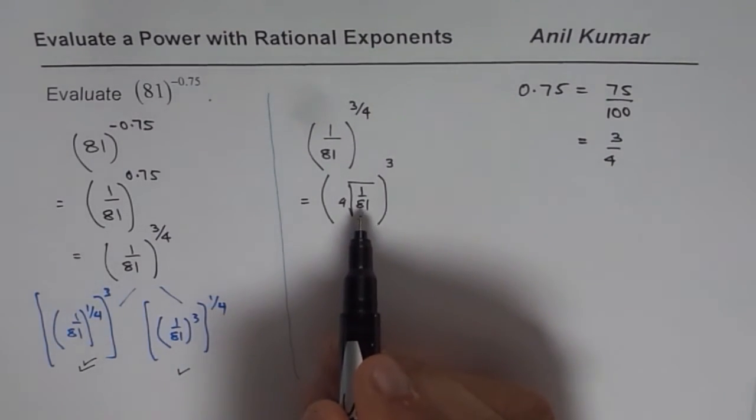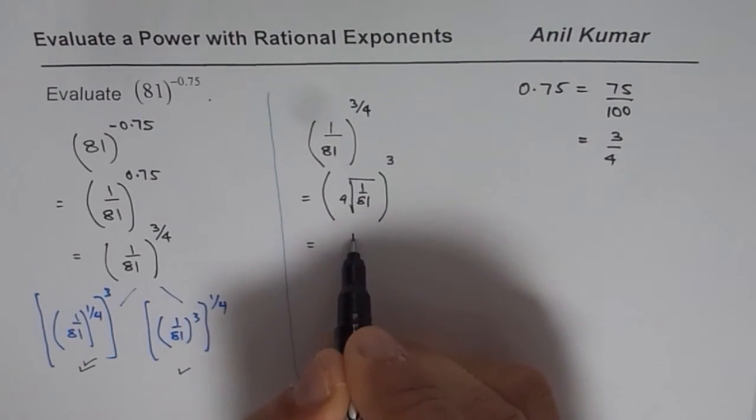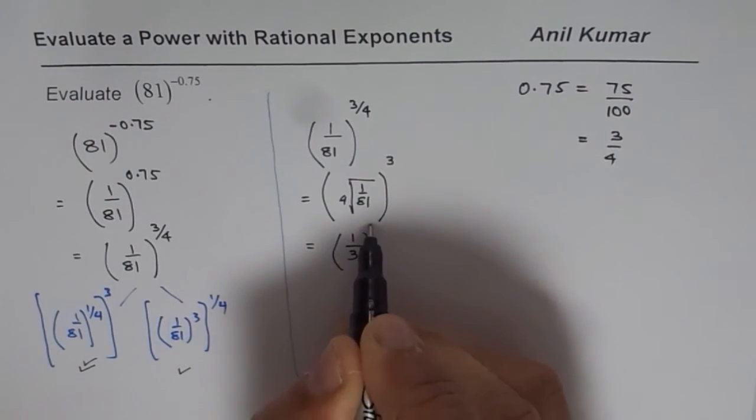Now fourth root of 81 is, you know, square root is 9. And square root of 9 is 3. So it is 3.